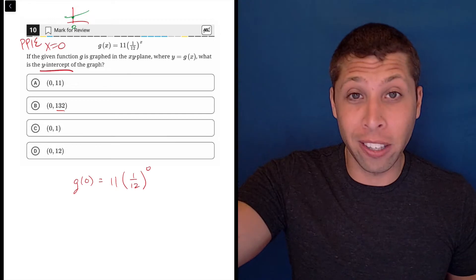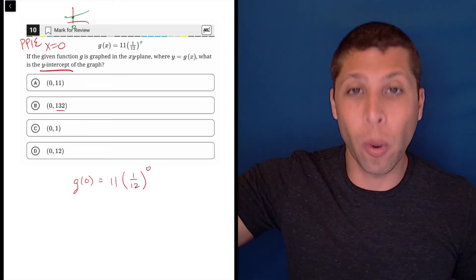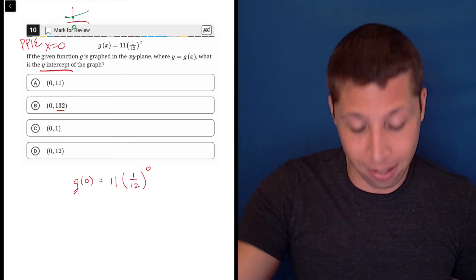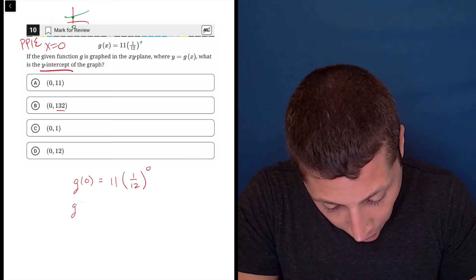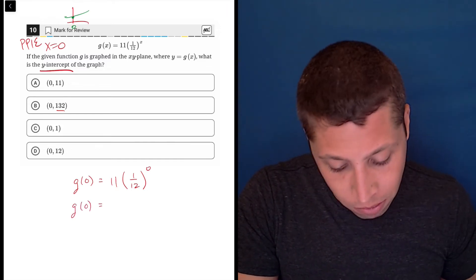So I'm looking for the y at that point, which is g(0). Well, any number raised to the zero power is equal to one.